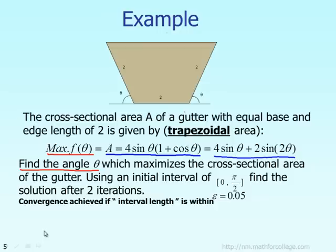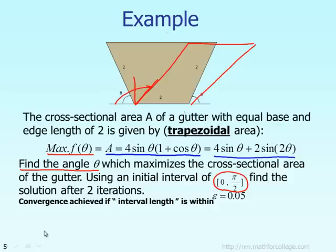We assume that theta must be between the lower bound of 0 radians and the upper bound of pi over 2, which is 90 degrees. You can see clearly why: if the angle is bigger than 90 degrees, the area of the gutter will not give the maximum value. That's why the optimum area corresponds to an angle theta somewhere between 0 and pi over 2.